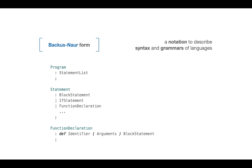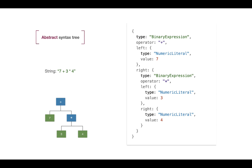When we think about the tree format, the most practical format today is JSON notation. Each AST node is represented as an object with a type property. For example, for the expression 7 plus 3 times 4, we see a binary expression with the operator plus, which has a left-hand side of numeric literal 7, and a right-hand side that is itself a binary expression with the times operator. As you can see, the correct precedence of operations is enforced — the times operator has higher precedence than plus, and parsers should enforce this.